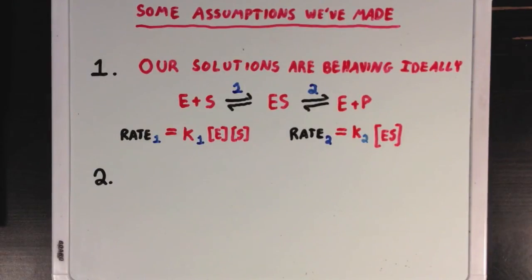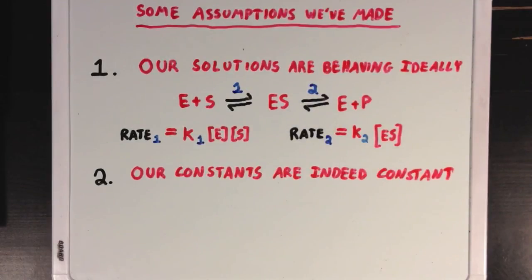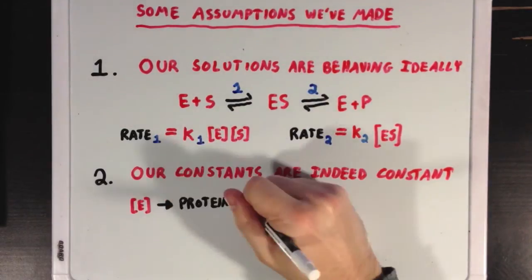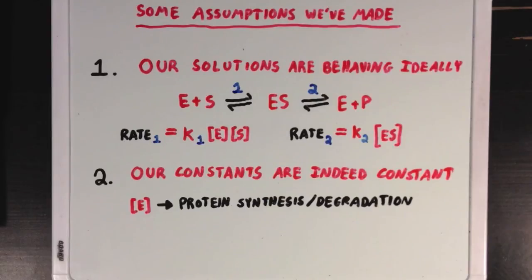Our second assumption is that our two big constants stay constant. We're assuming that our enzyme concentration isn't changing from things like protein synthesis and degradation, and we're also assuming that our rate constant K isn't changing from environmental factors like changes in temperature.